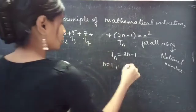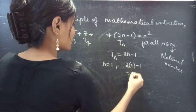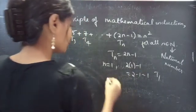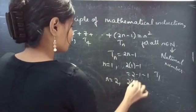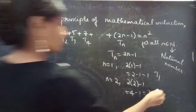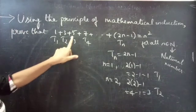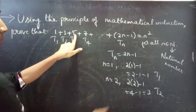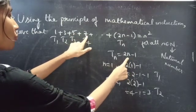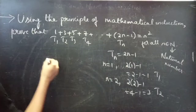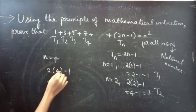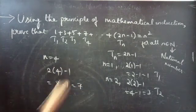If we put n equals to 1, we get 2 times 1 minus 1 equals to 1, giving us the first term. Likewise, if we put n equals to 2, we get the second term. If we put n equals to 3, we get the third term. Likewise, if we put n equals to 4, we get 2 times 4 minus 1 equals to 7, which is the fourth term.